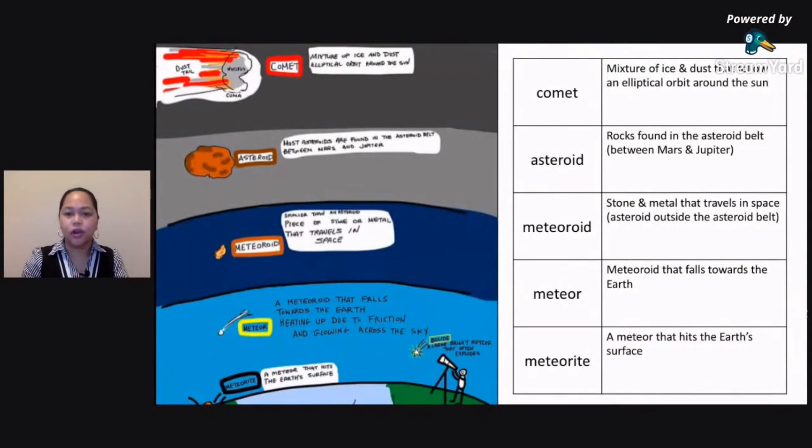Now before I give you the answer, I'd like you to please take note of all of this stuff that we have here. Because mostly, these things are being compared in the left. So we have five terms there: comet, asteroid, meteoroid, meteor, and meteorite.